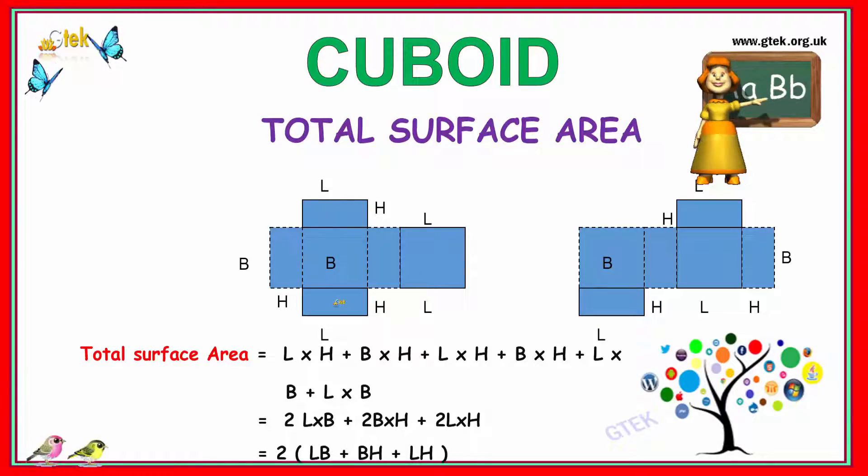How do we calculate the surface area of the cuboid? This is one rectangle: length into height, breadth into height, length into height, breadth into height, length into breadth, and length into breadth. So you've got 2 times length times breadth, 2 times breadth times height, and 2 times L times H, which gives the formula 2(LB + BH + LH).